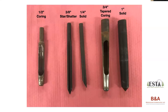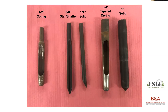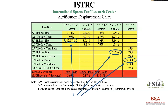From left to right: a half-inch coring tine, a three-eighths inch star or shatter type tine, a quarter-inch solid, a three-quarter inch tapered coring tine, and a one-inch solid tine. The star and shatter tines are great for relieving compaction. If you need to come out and loosen the surface slightly, a star tine is a good way to do that because it disrupts the surface very little but actually opens it up quite nicely. A star tine actually has more open surface area because of its star shape than a solid tine — I recommend those units highly.